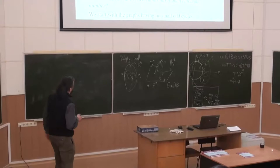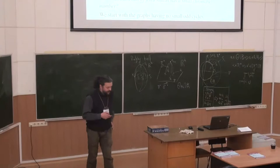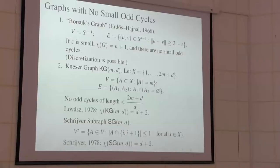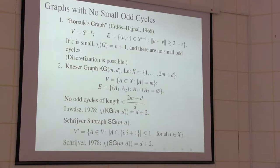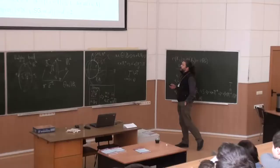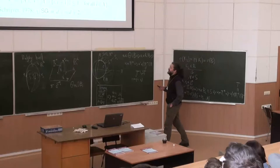Let us start with graphs which have no small odd cycles. The first example I would like to mention is the Borsuk graph, named so by Erdős and Hajnal. We take the (n−1)-dimensional sphere as the set of vertices and connect two vertices with an edge if the distance between them is almost the diameter of the sphere — that is, 2 minus epsilon for some small epsilon. From Borsuk's theorem it follows that the chromatic number of this graph is n+1, at least if epsilon is small enough.